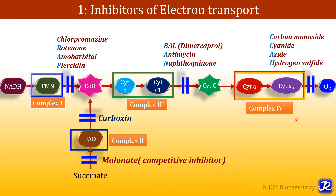The flow of electrons from complex IV finally to oxygen is inhibited by carbon monoxide, cyanide, azide, and hydrogen sulfide. So these are the various inhibitors of electron transport.